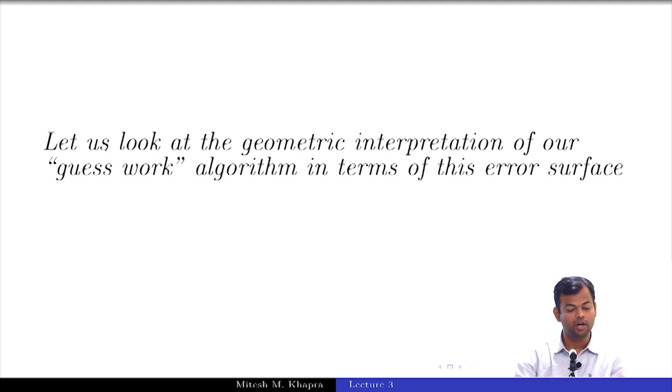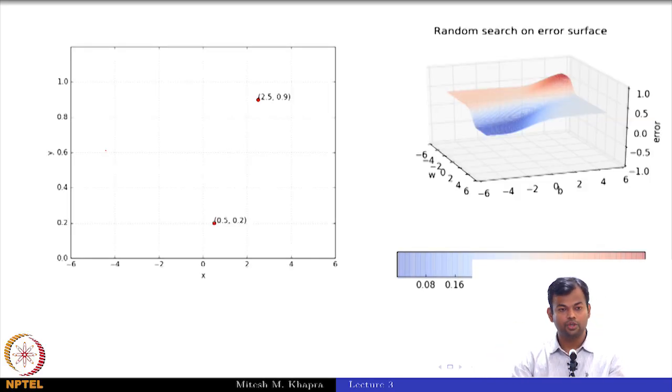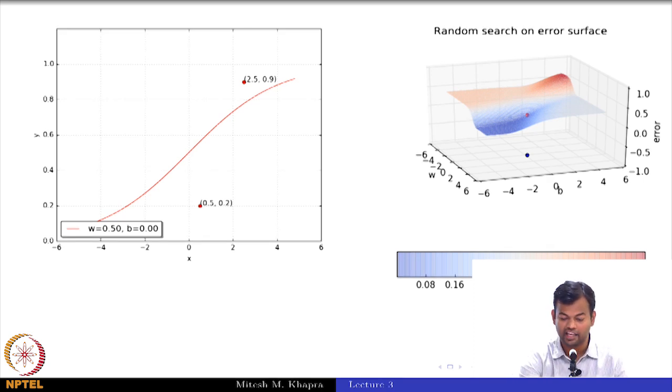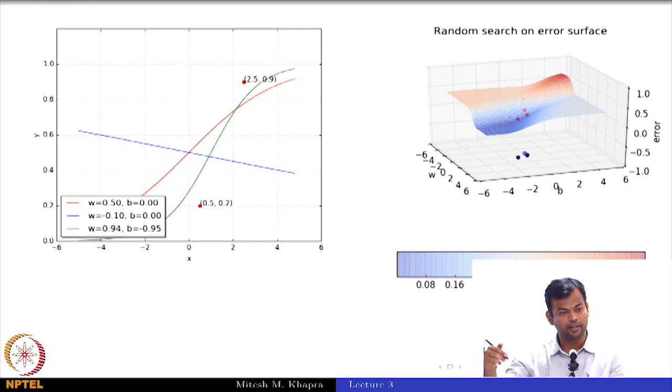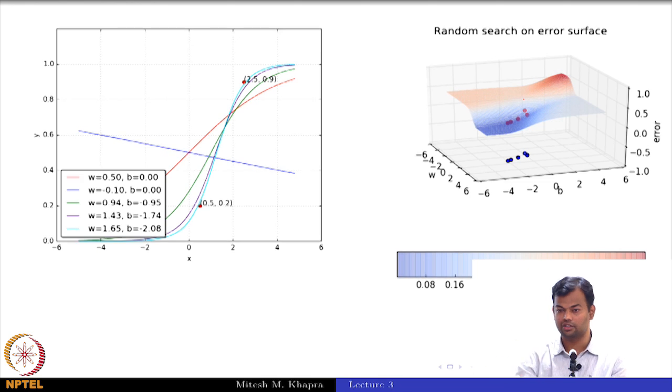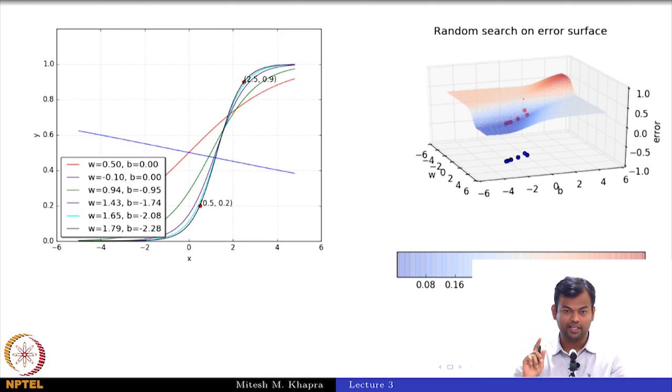And we look at the geometric interpretation of what was actually happening in the case of the guesswork algorithm with respect to the error surface. So I had chosen some values of w comma b. The first value that I chose actually gave me an error of 0.073 or something like that. So that is the point. Then I decided to take a very random guess and my error actually increased. So you see that I am actually climbing up on this error surface. I have gone from a slightly darker shade of blue to a lighter shade of blue, and then I corrected myself and then kept moving in a direction where I was going towards the darker and darker shades of blue. So what I was actually doing is I was trying to traverse the error surface and land up in the good regions which were the dark blue regions. Now what I want to do is I want an algorithm which will allow me to do this in a principled manner which is neither brute force nor guesswork. So that is where we will end that module.